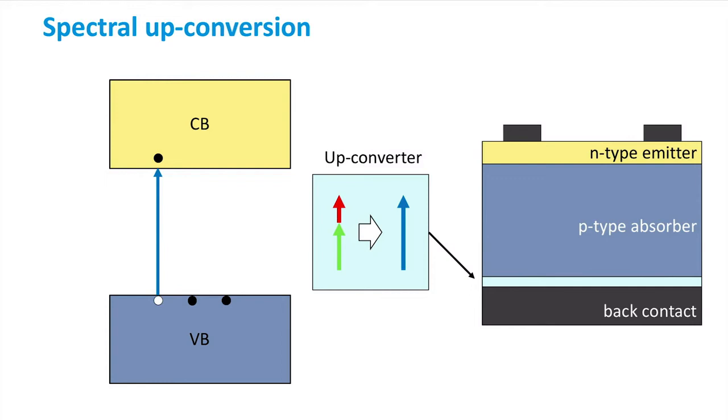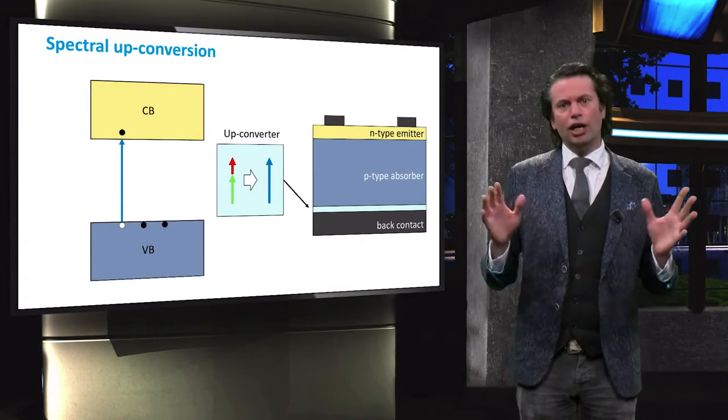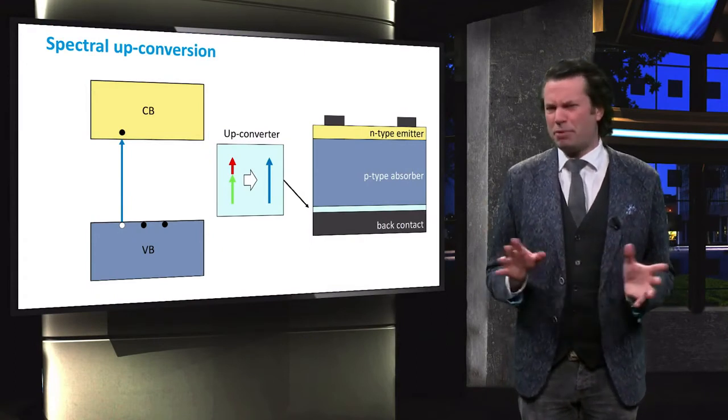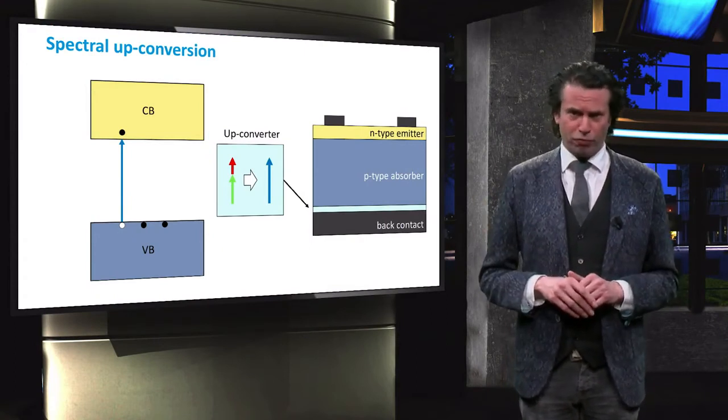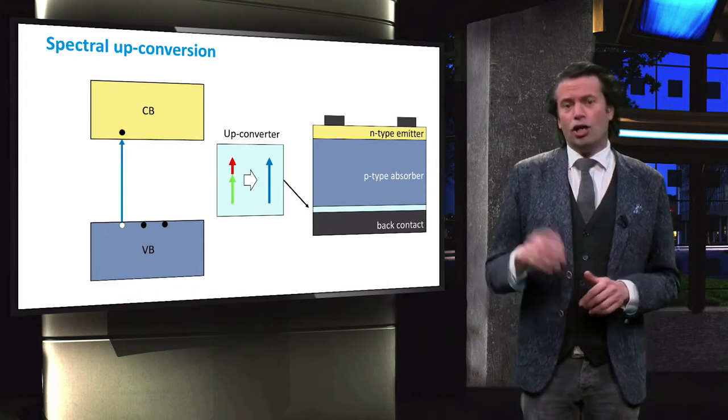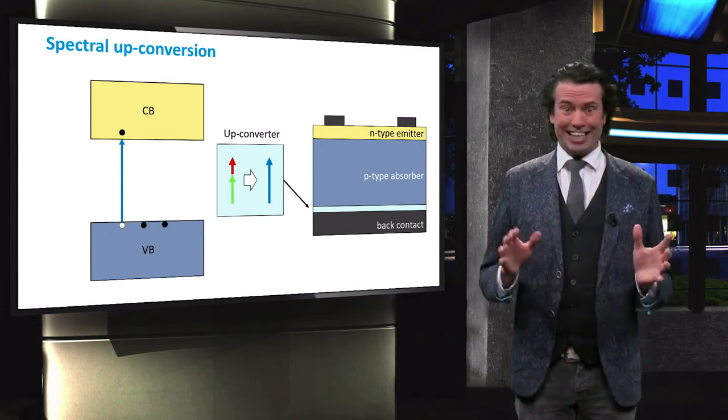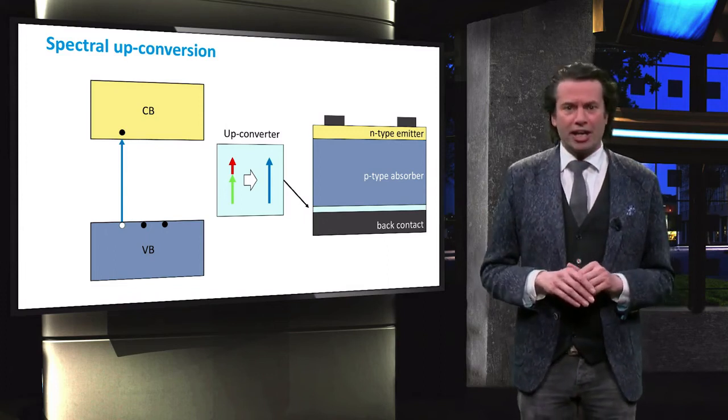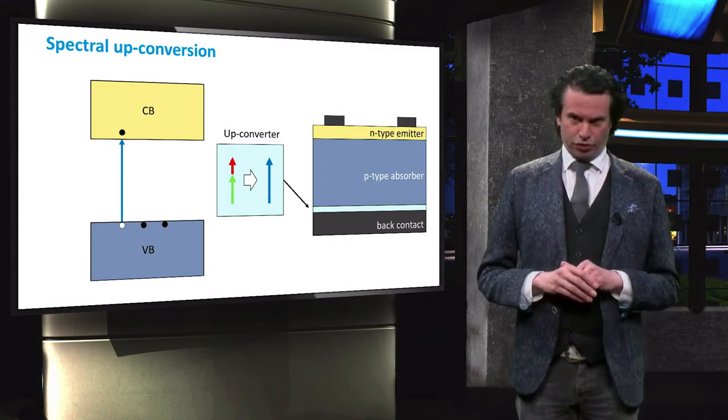The up-converting layer should be placed at the back of the solar cell to prevent the parasitic absorption of photons with an energy above the bandgap energy. Further, placing the up-converting layers at the back prevents them from being irradiated by high energy photons, which might reduce their lifetime. Two distinct material systems have been employed to produce photon up-conversion for solar cells.